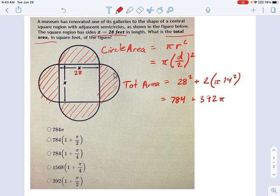Now you may not see this in the options given, but remember one of these numbers may be equivalent to it. And 392 is really just one half of 784, right? 784 divided by 2, yeah, that's 392. So you can factor out a 784, and what you get is 784 times 1 plus one half pi. And you can see that answer right here.